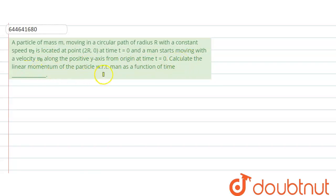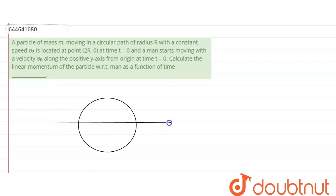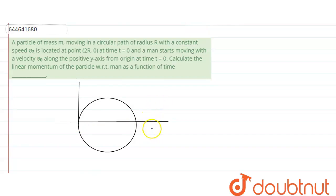We need to calculate the linear momentum of the particle with respect to the man as a function of time. Let us draw the circular path with the x-axis and y-axis. Initially the particle is located at (2r, 0), on the circumference of this circle. The man is moving with velocity v₀ in the j-direction.